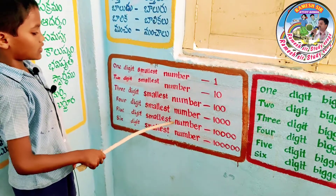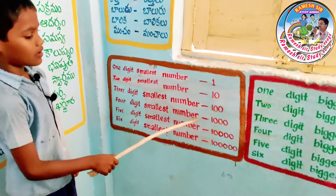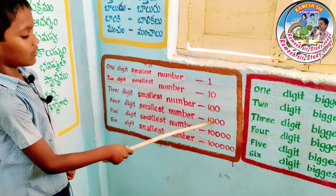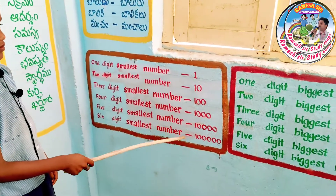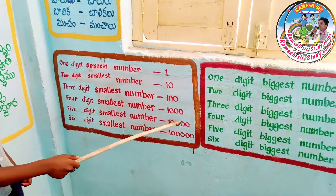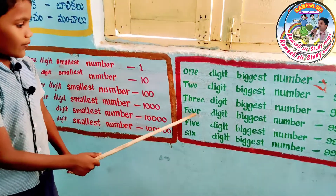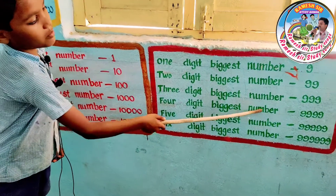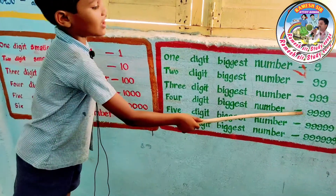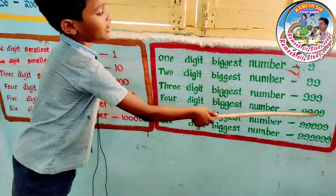Four digits smallest number: thousand. Four digits biggest number: nine thousand nine hundred and ninety-nine.